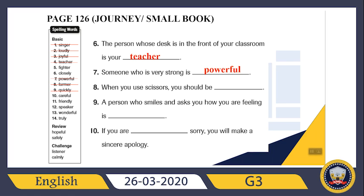What about the ninth sentence? 'A person who smiles and asks you how you are feeling is...' — friendly! If you always smile and ask how someone is feeling, you are friendly. What about the last sentence? 'If you are sorry, you will make a sincere apology.' If you are truly sorry, if you are really sorry, you will make a sincere apology.